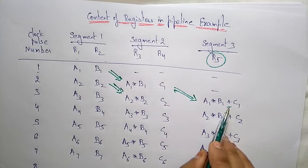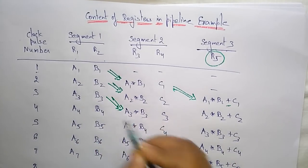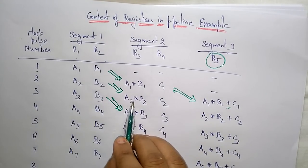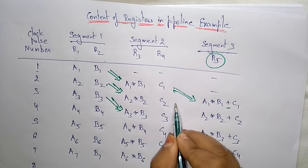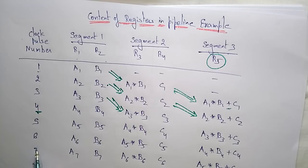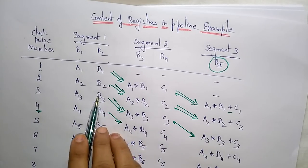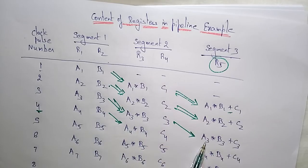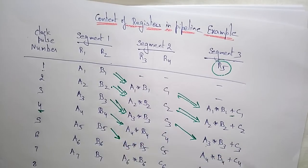So one instruction result is complete after clock pulse 3. In clock pulse 4, segment 2 multiplies A3*B3, segment 1 fetches A4 and B4, and segment 3 adds A2*B2+C2. Each phase is different — here it is fetching, here it is decoding, and here it is executing. All phases are in different stages and no two phases collide. One instruction executes in one phase while another instruction executes in another phase simultaneously, and this continues up to A7, B7.